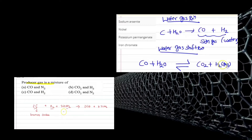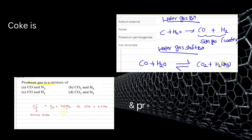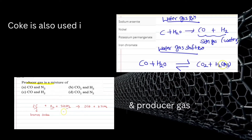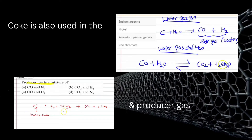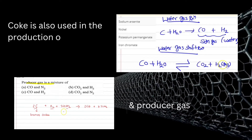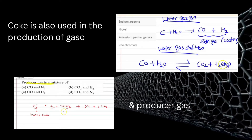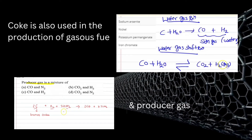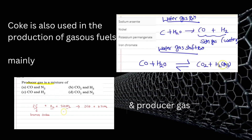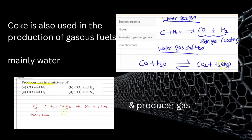Let's now take a closer look at gasification of coke. When hot steam is allowed to pass through coke, it produces two gases. The first is called water gas, also known as syngas.